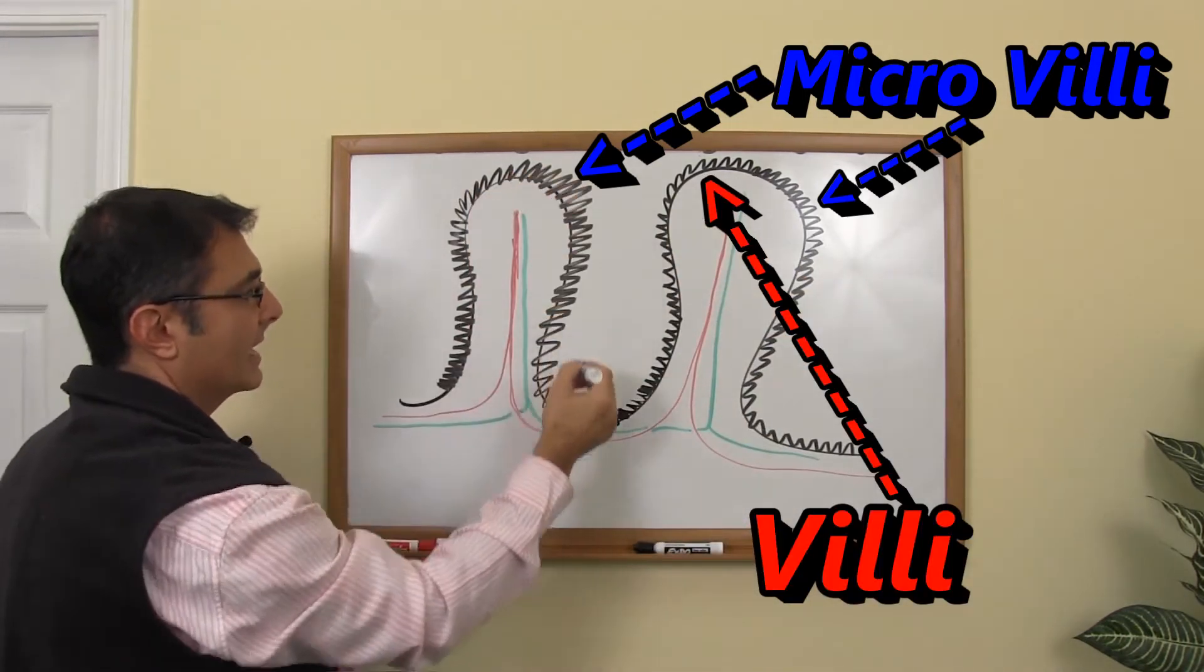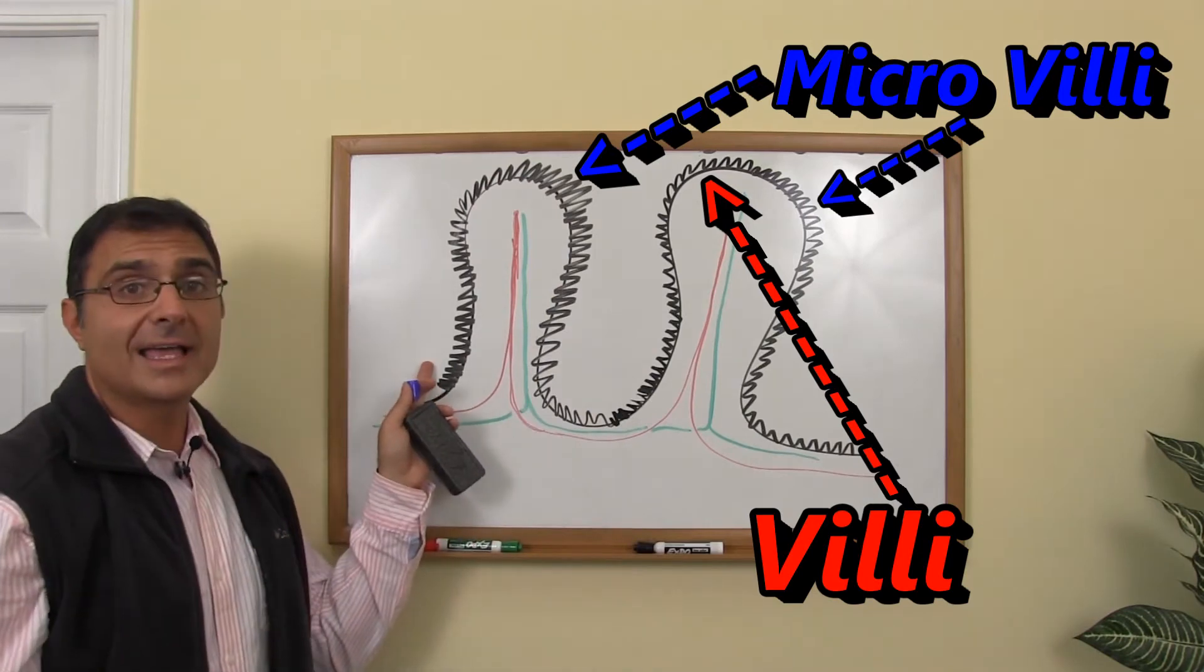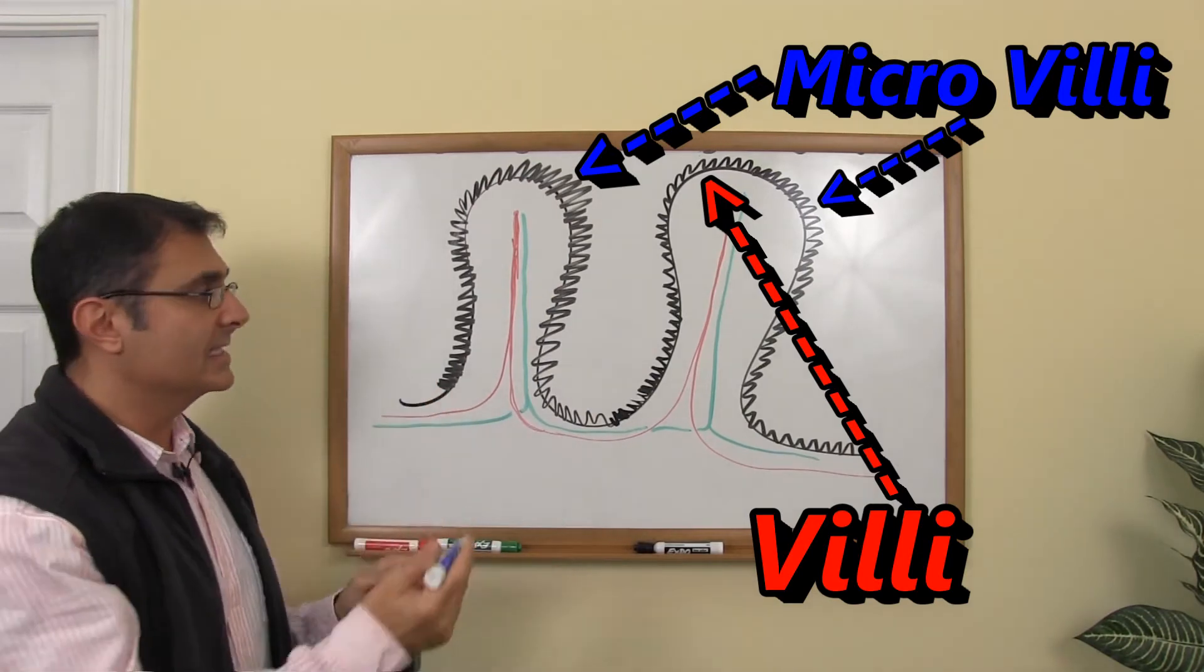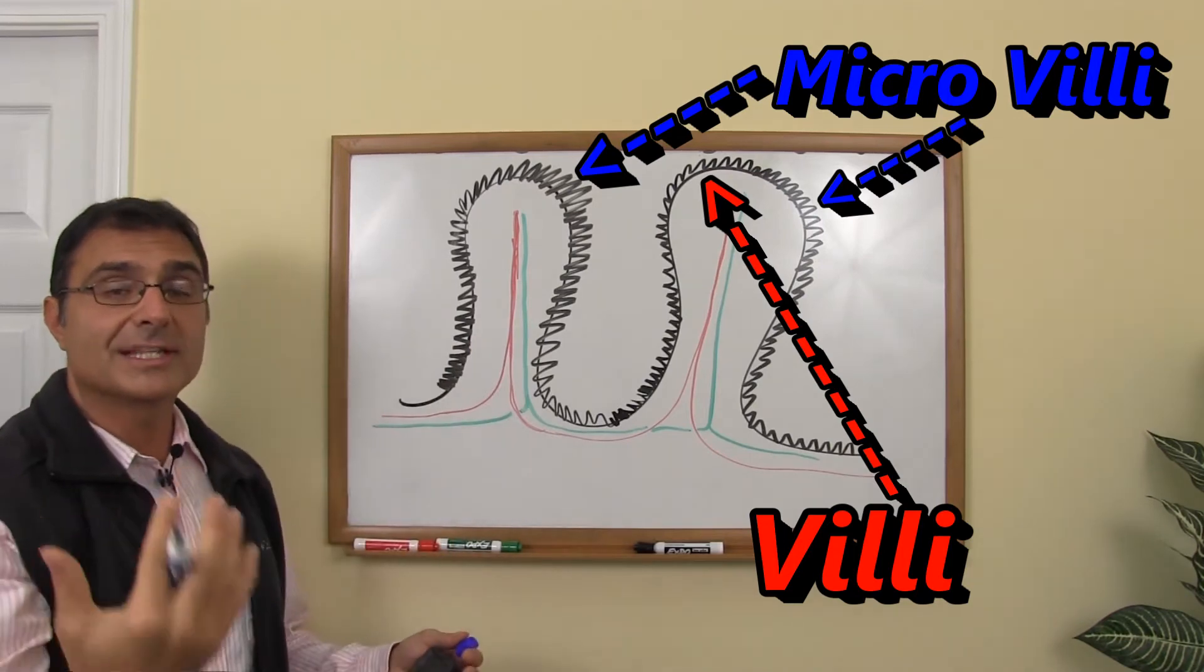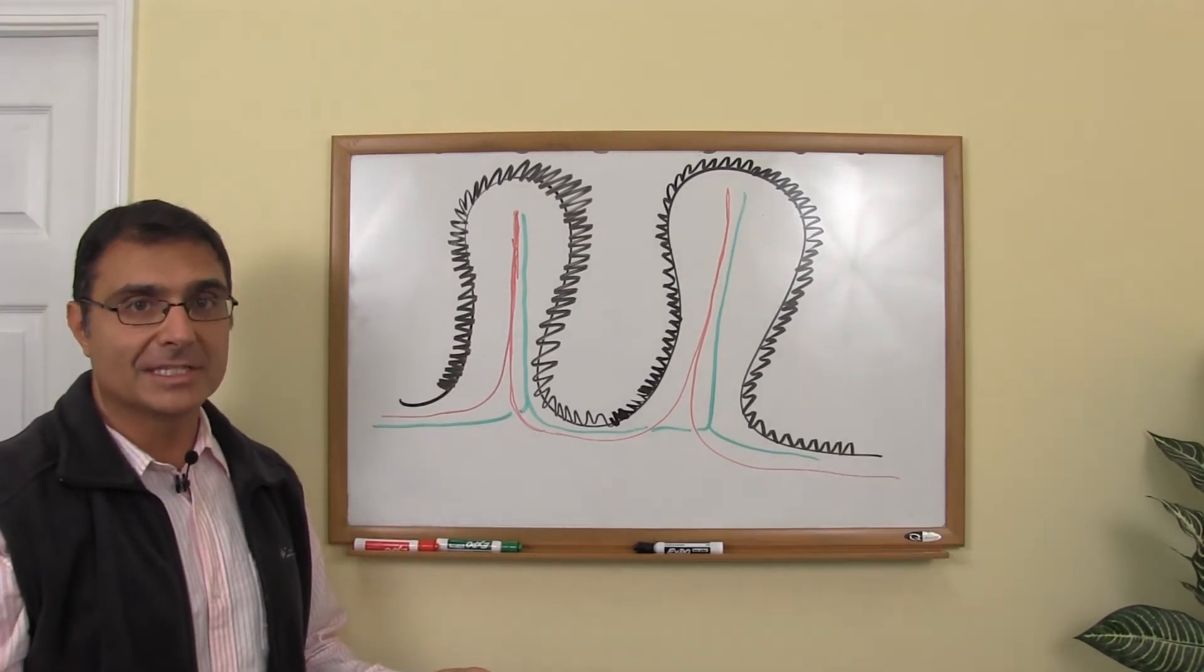here are the little micro villi lining it. And these micro villi, they act like a net. They say what gets into the bloodstream and what doesn't. So the good stuff gets in, the bad stuff does not.